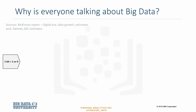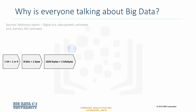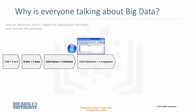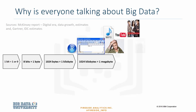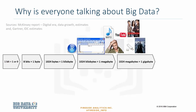How big is a zettabyte? One bit is binary — it's either a 1 or a 0. 8 bits make up 1 byte, and 1024 bytes make up 1 kilobyte. 1024 kilobytes make up 1 megabyte. Large videos and DVDs will be in gigabytes, where 1024 megabytes make up 1 gigabyte of storage space.